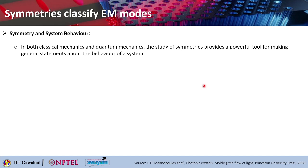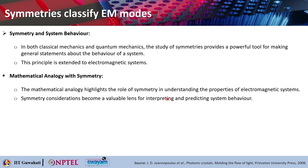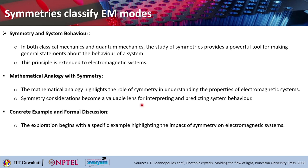EM modes are basically distributions of electromagnetic energy. You can take help of symmetries to classify different electromagnetic modes. In both classical mechanics and quantum mechanics, the study of symmetry provides a powerful tool for making general statements about the behavior of the system. This principle can be extended to electromagnetic systems as well. The mathematical analogy highlights the role of symmetry in understanding the properties of electromagnetic systems, and symmetry considerations become a valuable lens for interpreting and predicting system behavior.